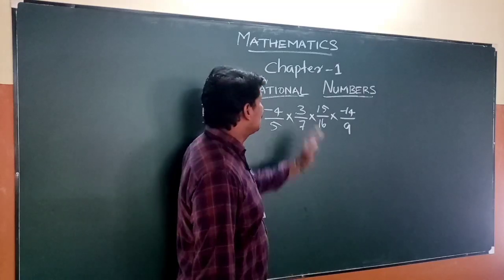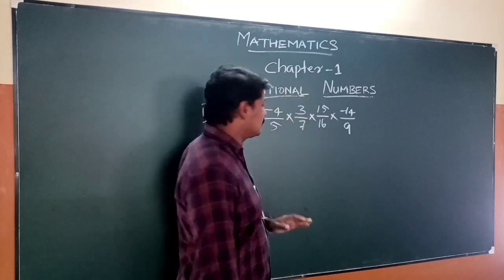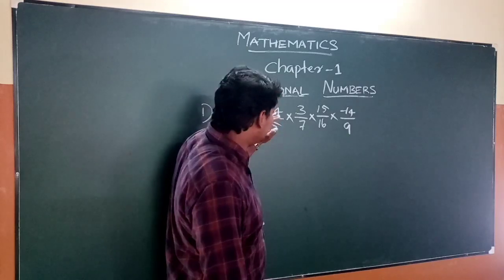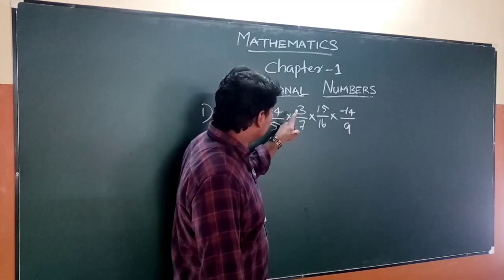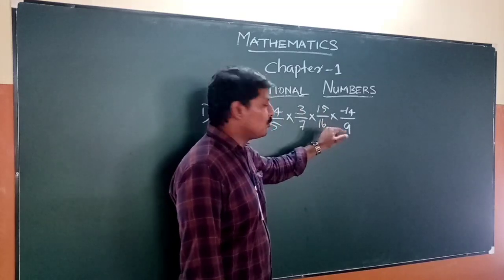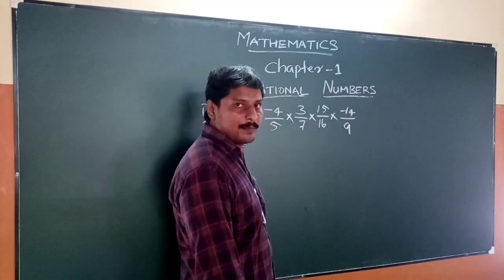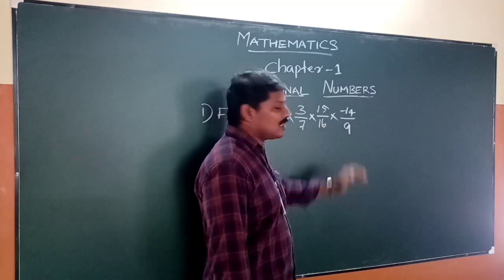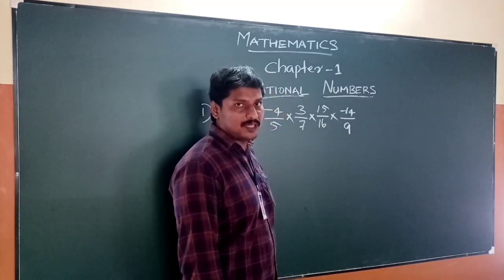In this video we discuss Chapter 1, Rational Numbers. The problem is: (-4/5) × (3/7) × (15/16) × (-14/9). We have four rational numbers being multiplied together.